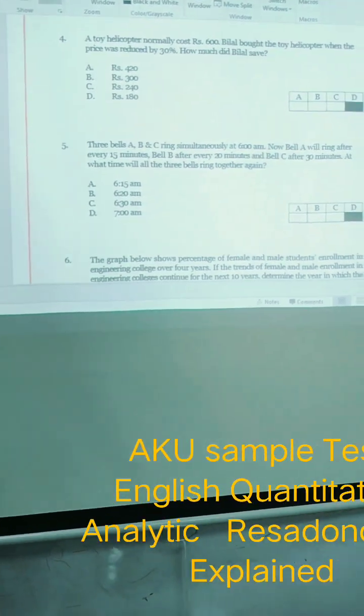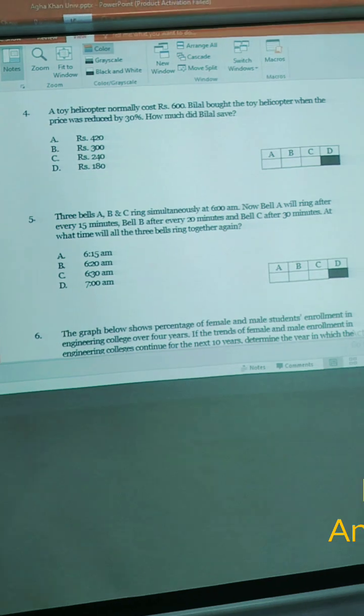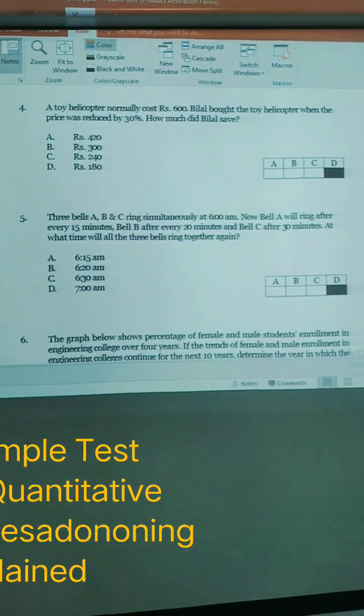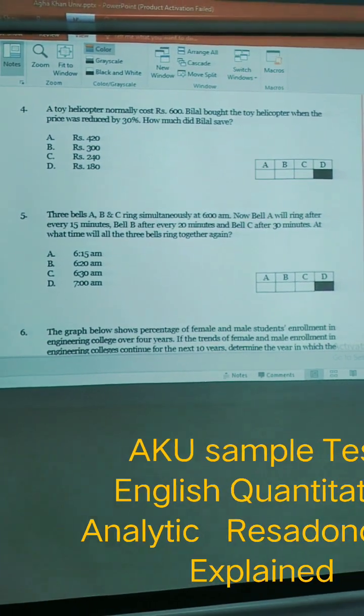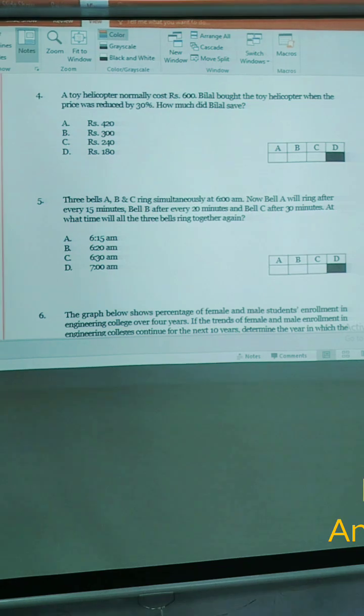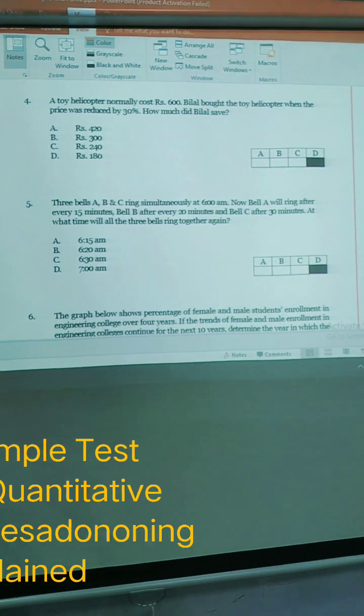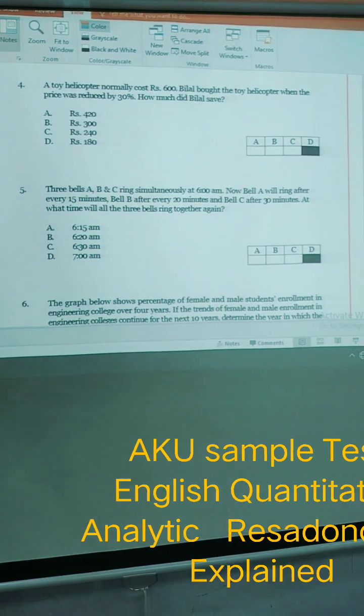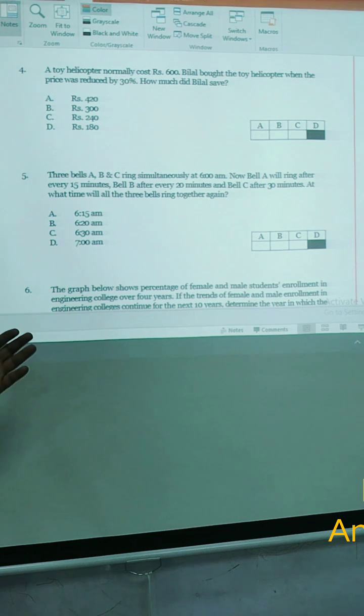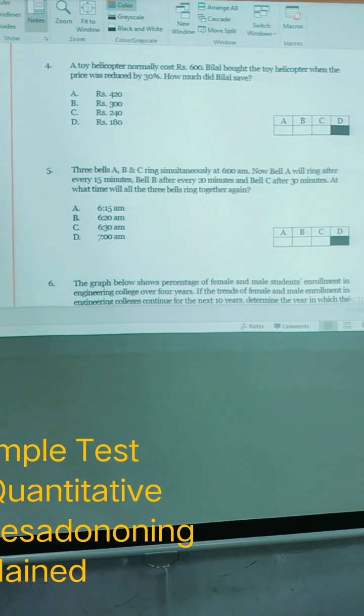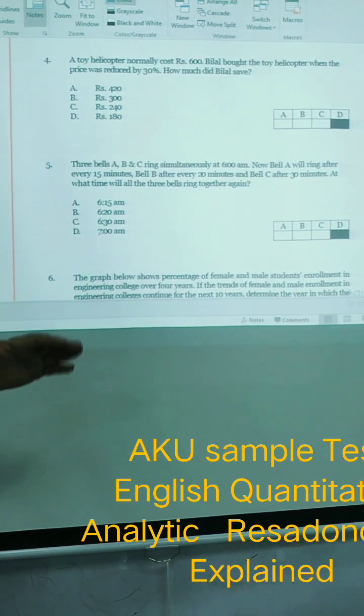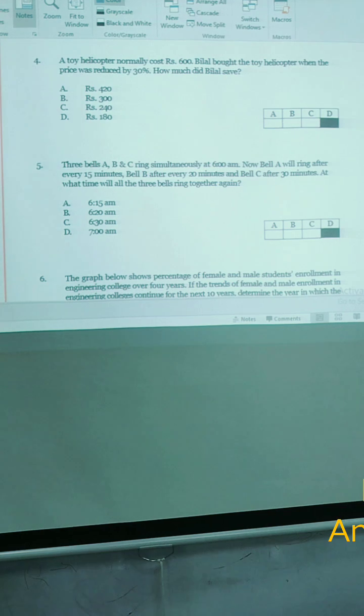This is another very interesting question. A toy helicopter normally costs 600. Bilal bought the toy helicopter when the price was reduced by 30 percent. How much did Bilal save? It means it was 600, but now it is reduced by 30 percent. So option D is 180.